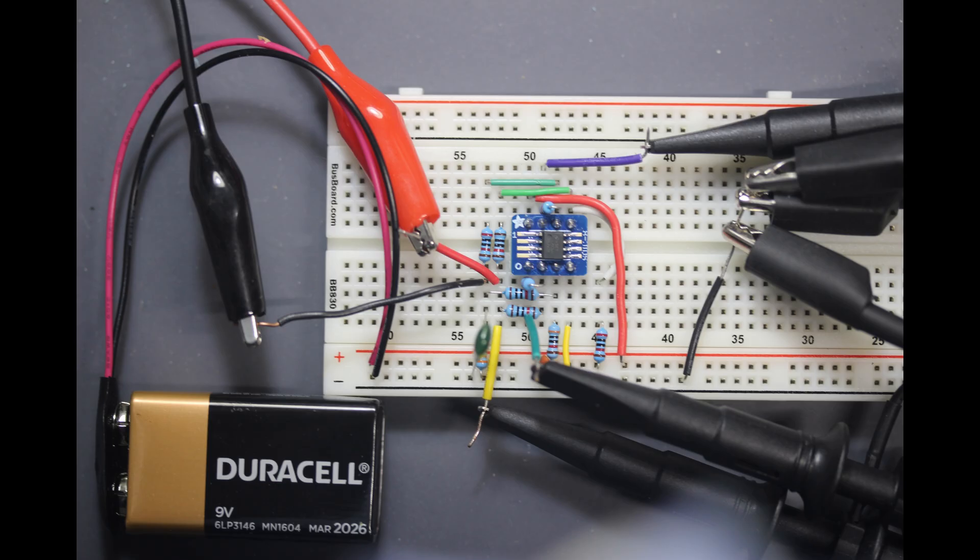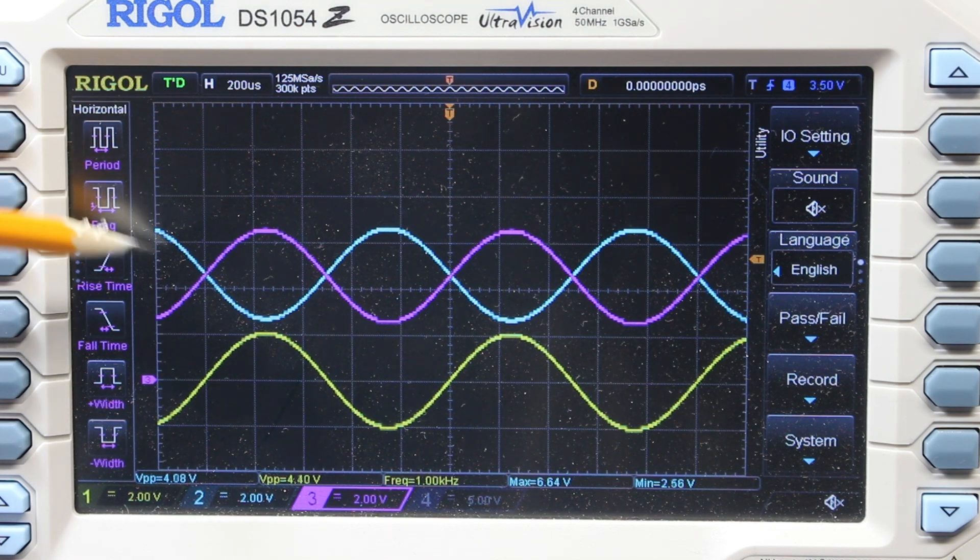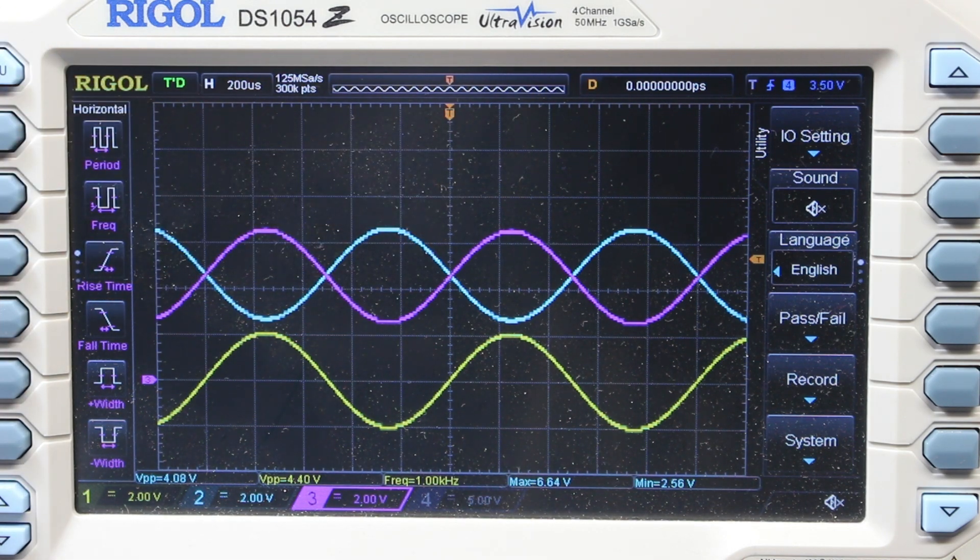Here it is on the breadboard. There's not too much to say about it. It just sort of sits there. I have my function generator coming in at the left, and I'm monitoring the input signal, the inverting output, and the non-inverting output on three scope channels. I'll give it a 4-volt sine wave. On the scope, I see inputs swinging around ground, while the two output channels, one inverting and one non-inverting, are both centered neatly on 4.5 volts.